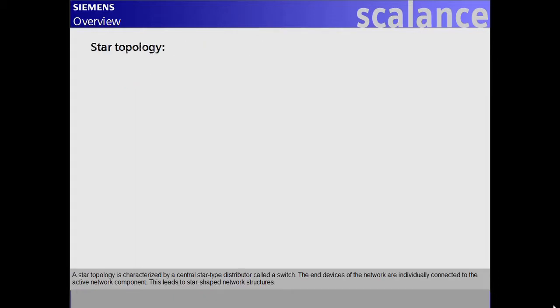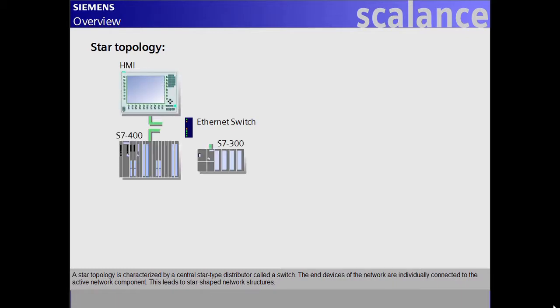A star topology is characterized by a central star-type distributor called a switch. The end devices of the network are individually connected to the active network component. This leads to star-shaped network structures.